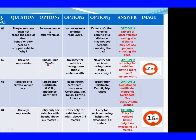Question 62: The sign represents. Option 1: Speed limit 2 km per hour. Option 2: No entry for vehicle having more than 2 metres wide. Option 3: No entry for vehicle having more than 2 metres wide. Question 63: Records of private vehicles are. Option 1: Registration Certificate, PUC, Insurance Certificate. Option 2: Registration Certificate, Insurance Certificate, Tax Token, Driving License.